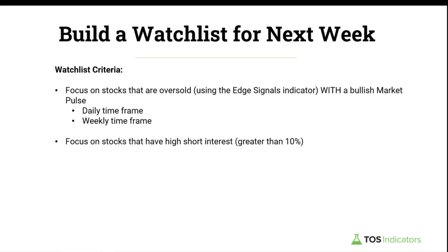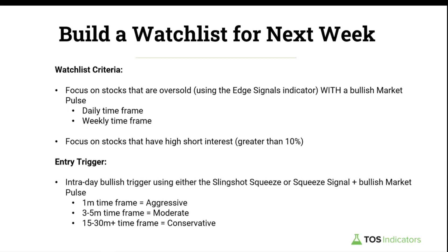Once we have our watch list, we also have a well-defined entry trigger list. This happens anytime Monday through Friday. For our entry trigger, we're looking at an intraday timeframe chart — anywhere between a one-minute to a 30-minute or even greater timeframe. You can scale that based on how aggressive you are in trading. On that intraday chart, we look for either a slingshot squeeze or a squeeze signal, both overlaying the Edge Signals with squeeze conditions to help time entries.